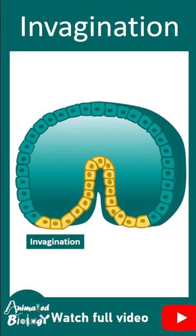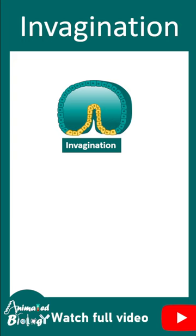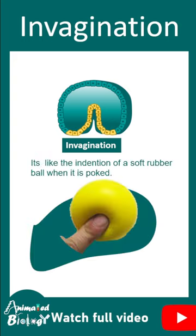This happens during gastrulation, during which cells move inward. This is very similar to when you poke a rubber ball with a finger — an indentation forms, and these processes are similar.